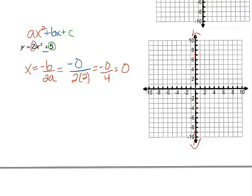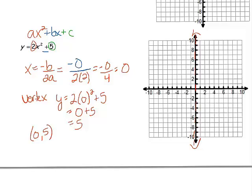Let's find the vertex. If I plug in 0 for x, I get 2(0)² + 5 = 5. So my vertex is at (0, 5).